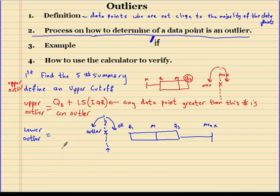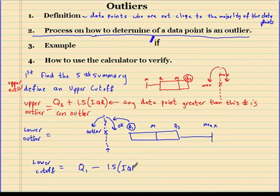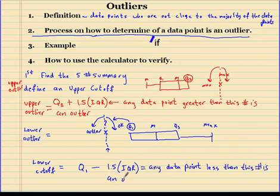This is our lower cutoff — very similar to the upper. We take Q1, which is the 25th percentile, since 25% of the data falls to the left. Then we subtract 1.5 times the IQR. The IQR is the interquartile range — a measure of spread in our data set. Any data point less than this number is an outlier.